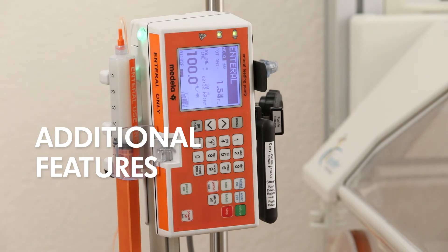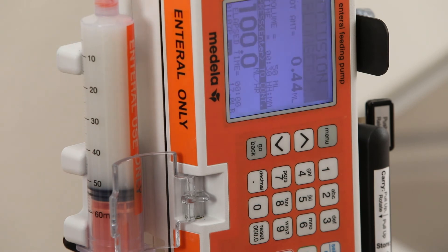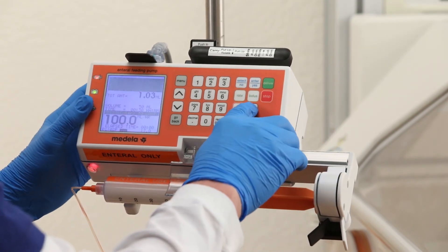The Medela Enteral Feeding Pump features occlusion detection, an alarm delay function, and will track total volume delivered even if the pump is turned off. When the Medela Enteral Feeding Pump detects an occlusion, it will draw slightly back on the plunger. In some cases, this eliminates the occlusion. If not, the pump will alarm to alert the clinician so the occlusion can be resolved.